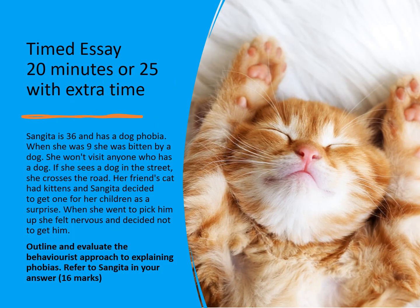You should try this timed essay and allow about 20 minutes to write it — that's how long you would get in the exam for a 16-marker. The stimulus is: Sangeeta is 36 and has a dog phobia. When she was nine, she was bitten by a dog. She won't visit anyone who has a dog, and if she sees a dog in the street she crosses the road. Her friend's cat had kittens and Sangeeta decided to get one for her children, but when she went to pick it up she felt nervous and decided not to get it. Outline and evaluate the behaviourist approach to explaining phobias. Refer to Sangeeta in your answer. 16 marks.